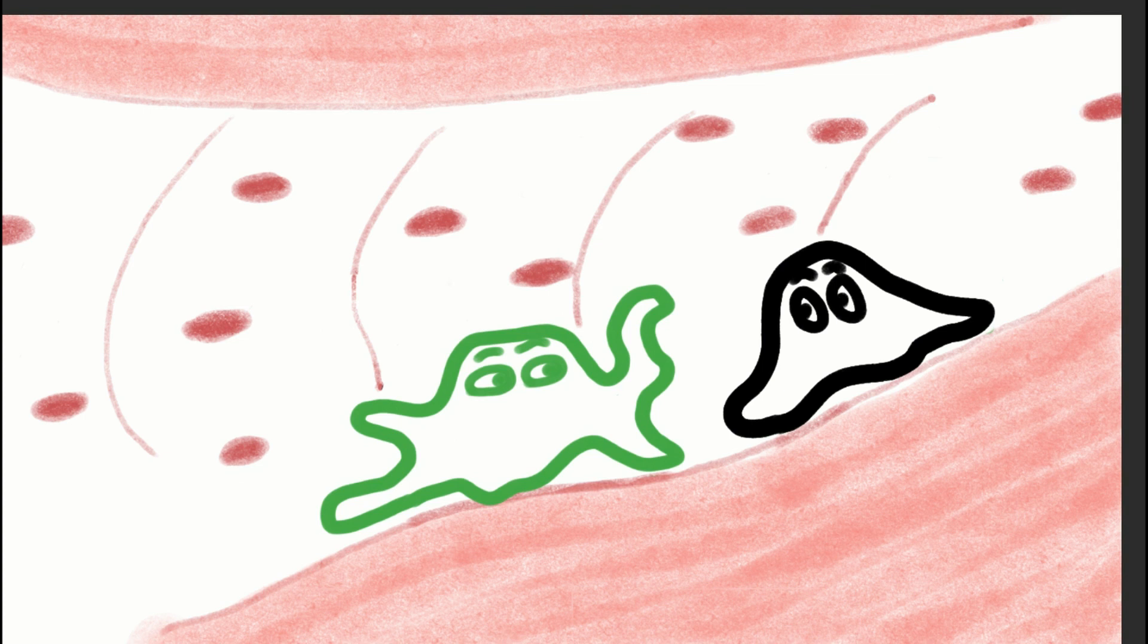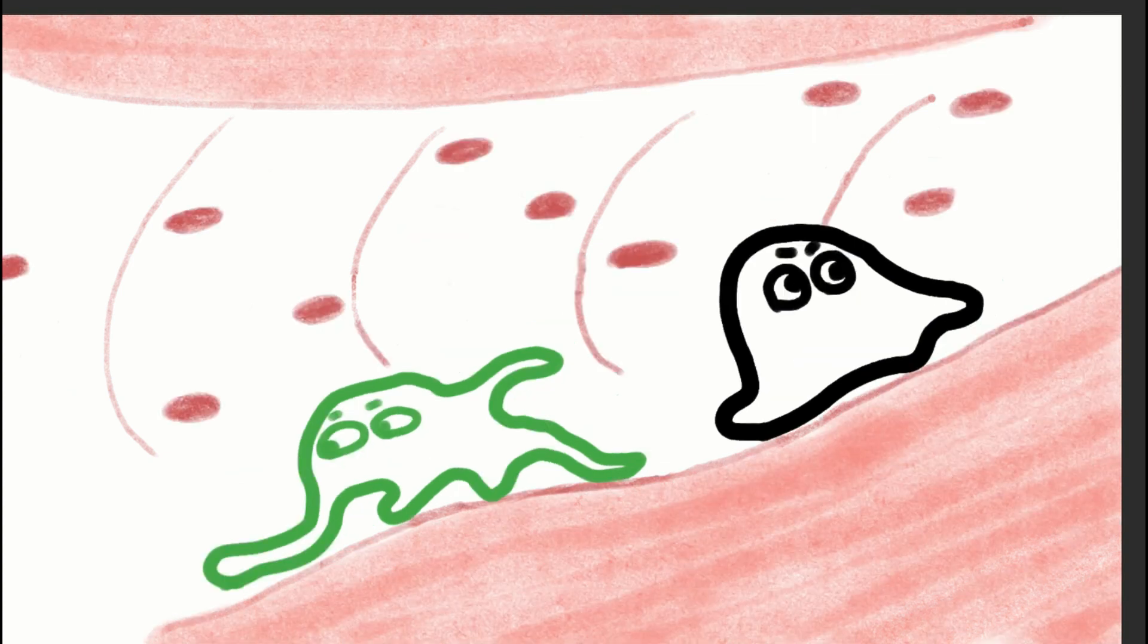The dendritic cell speeds off leaving the T cell rather confused. I wonder why that cell called me boss. It seems like I have a big job to do but I need to learn more first. That cell was in too much of a hurry to answer my questions.